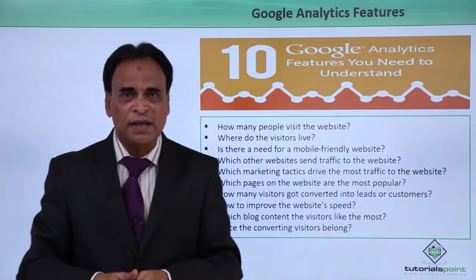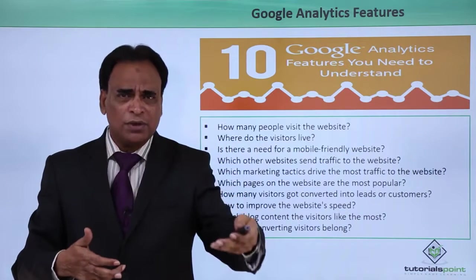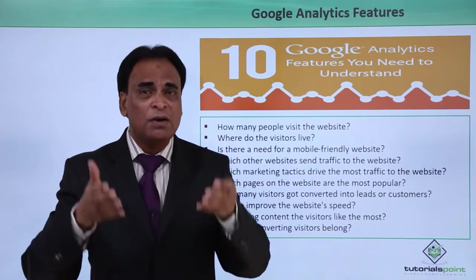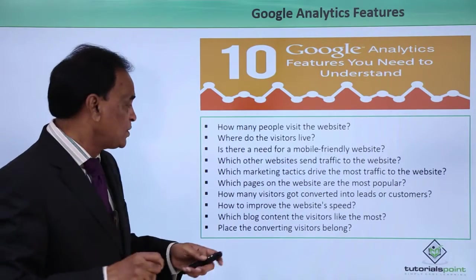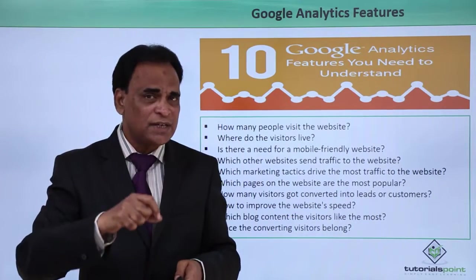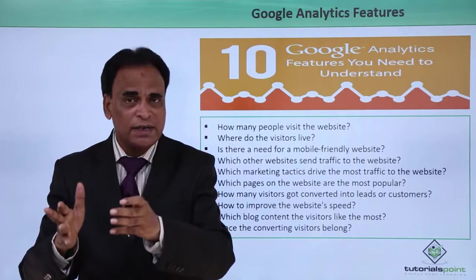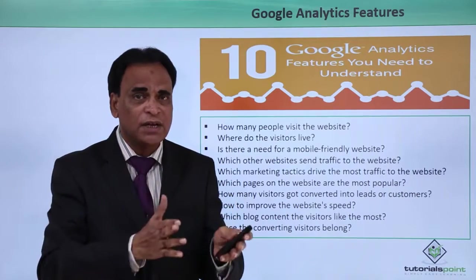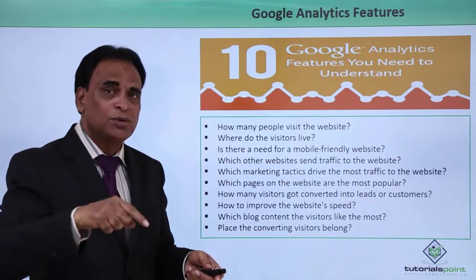Which pages of the website are the most popular? If there are about 100 pages on your website, when traffic comes, some people come to the homepage and may leave from there, some go to certain pages and some may not. Google Analytics shows which are the most viewed pages on your website. Additionally, how many visitors get converted into leads and customers — PPC and AdWords campaigns can be integrated with Google Analytics so you can track leads and customers from those campaigns.